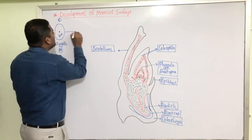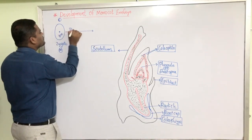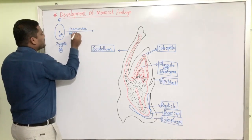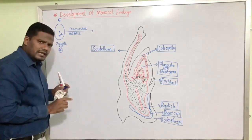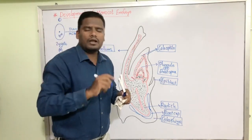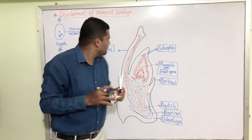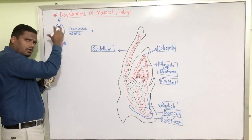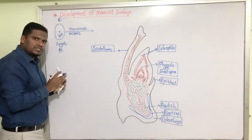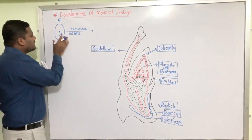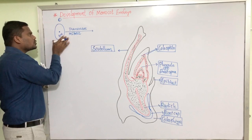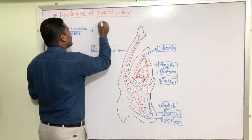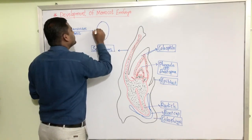The diploid zygote undergoes transverse mitosis. Initially the development process of both dicot and monocot embryo seems to be very similar. The monocot zygote also undergoes a transverse mitosis and results in the formation of two cells.